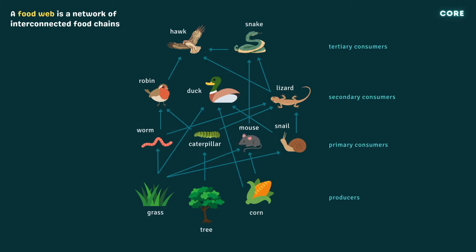The producers are placed at the bottom of the diagram, and rows of consumers are placed above — first the primary consumers, and then the secondary, and so on. Arrows can then be added to show the transfer of energy through the system. Just like with food chains, these arrows always point from food to consumer.